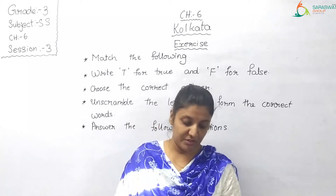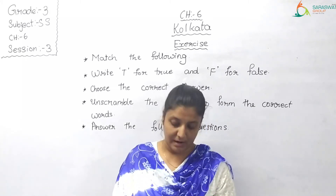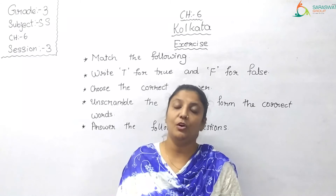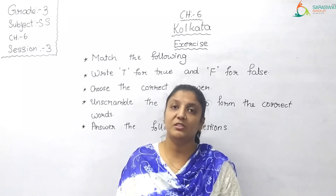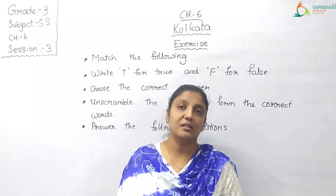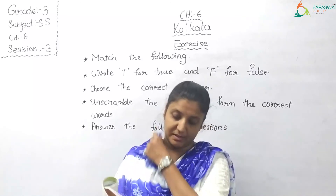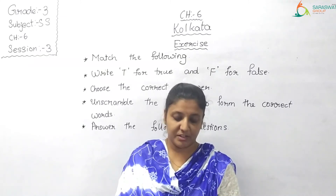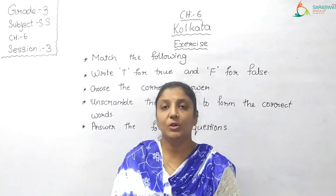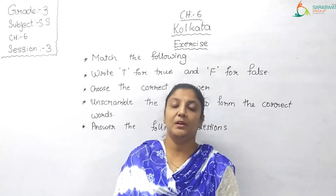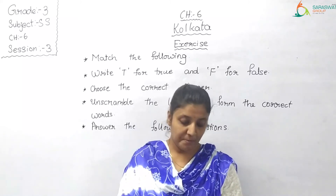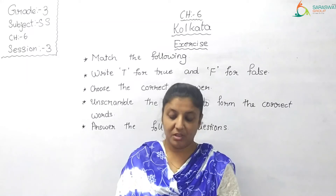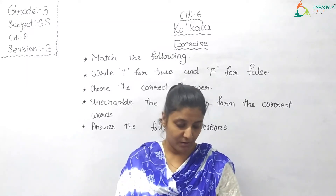Moving on to the next question: choose the correct answer. Here they have given blanks and four options below each blank. A: The city of Kolkata is situated near the river dash. Options: 1. Hooghly, 2. Yamuna, 3. Narmada, 4. Tapti. The answer is number 1, Hooghly.